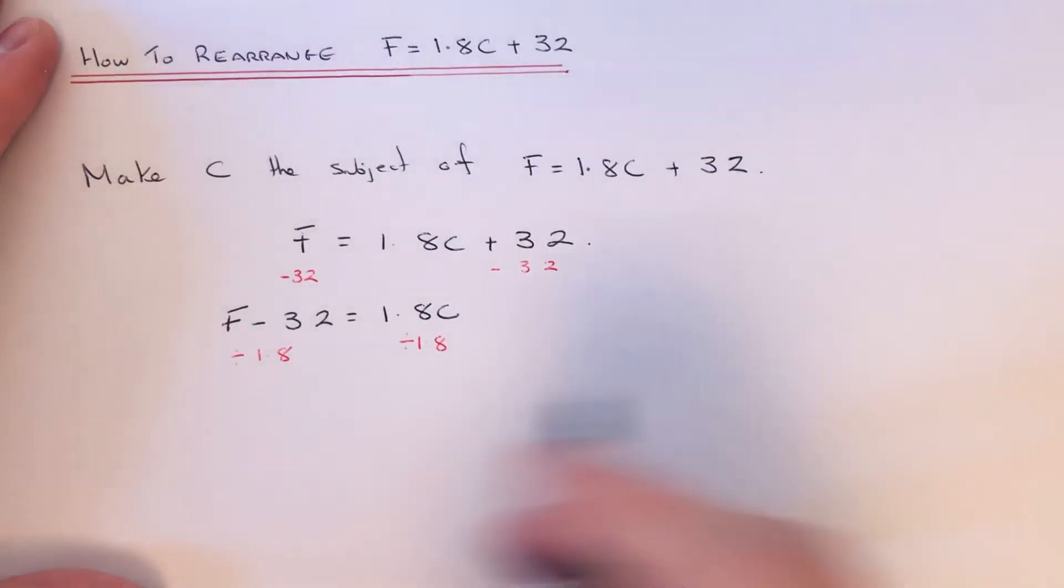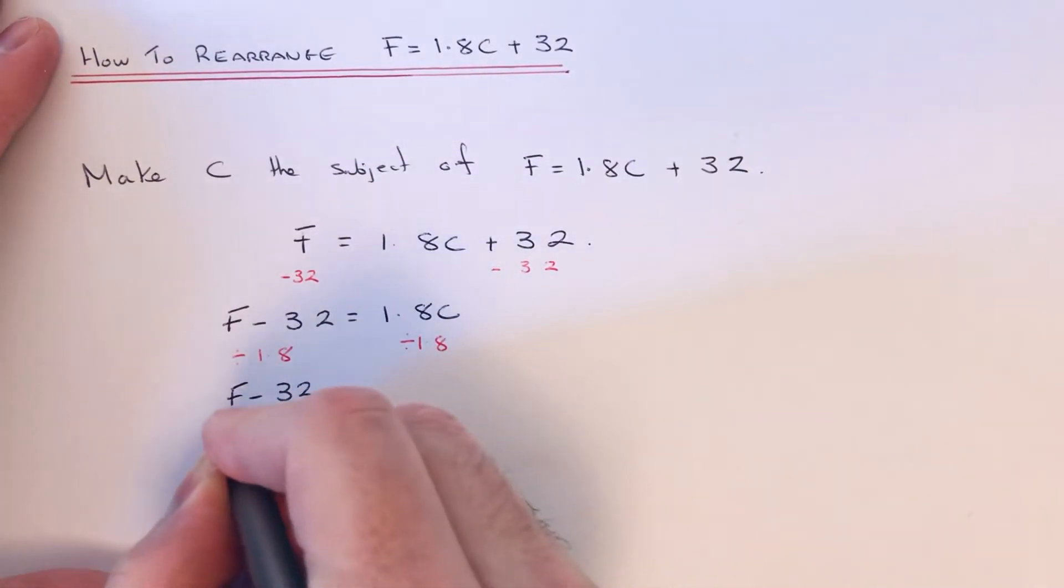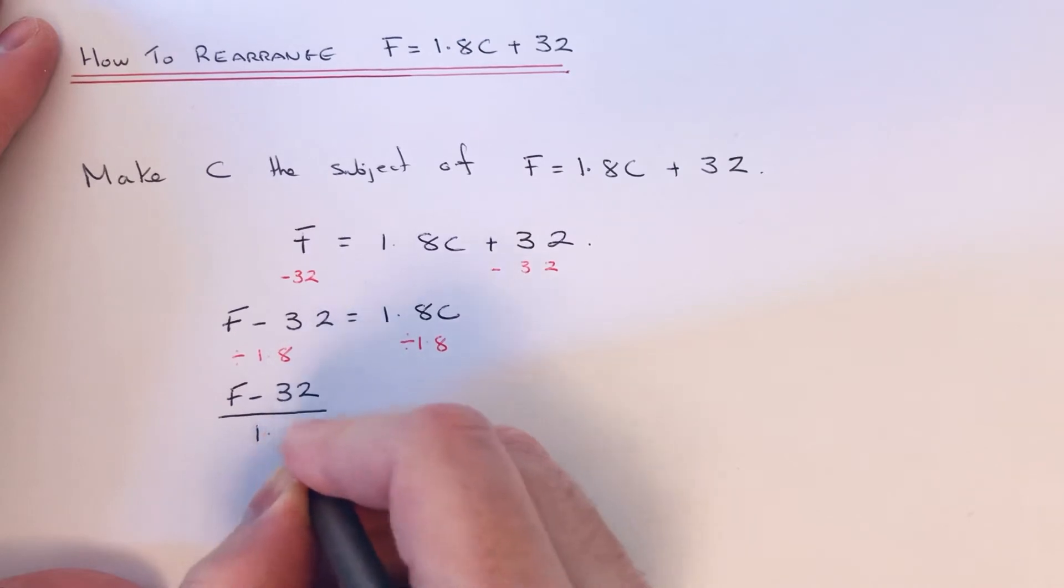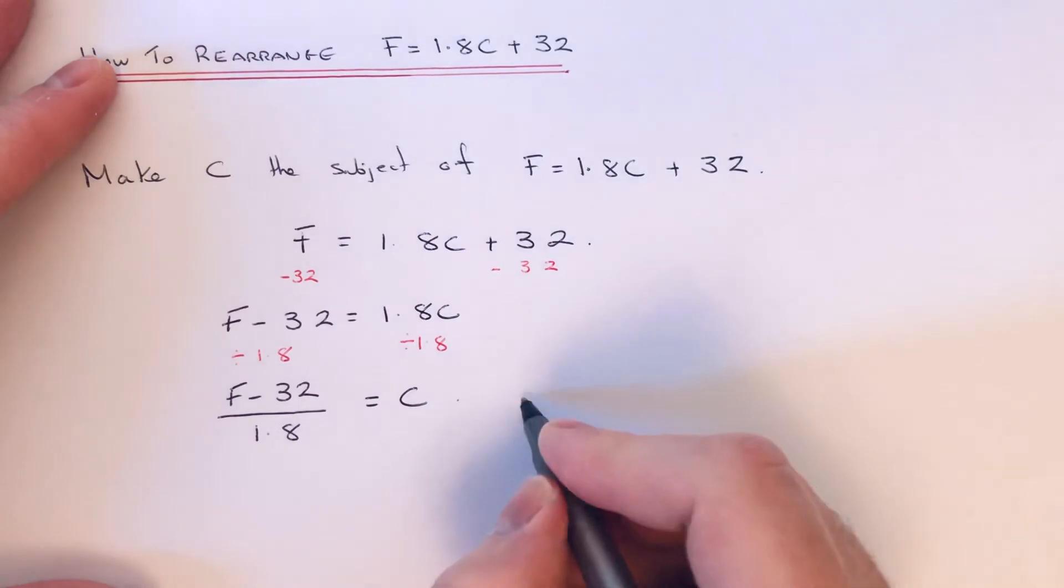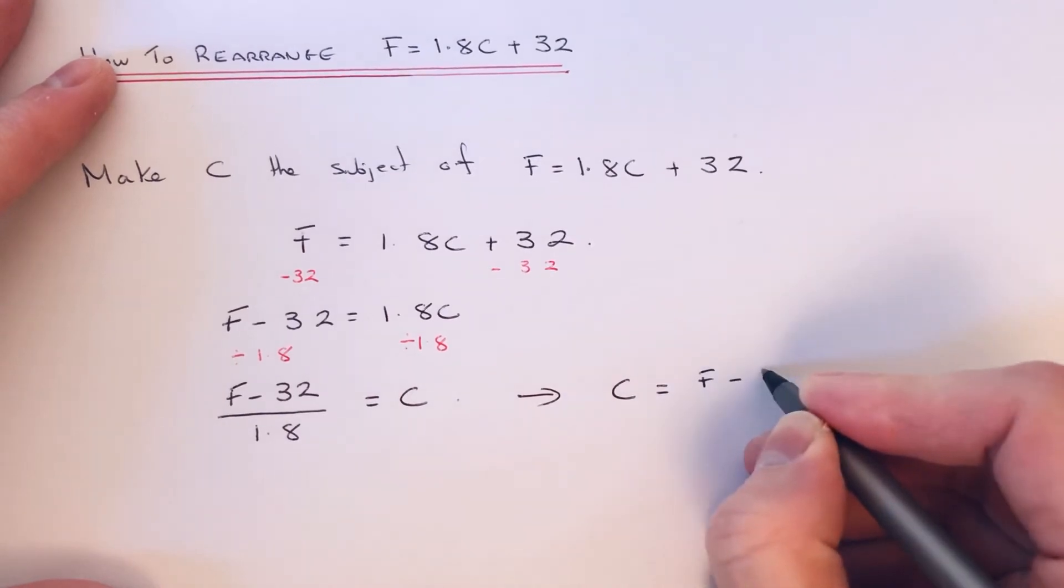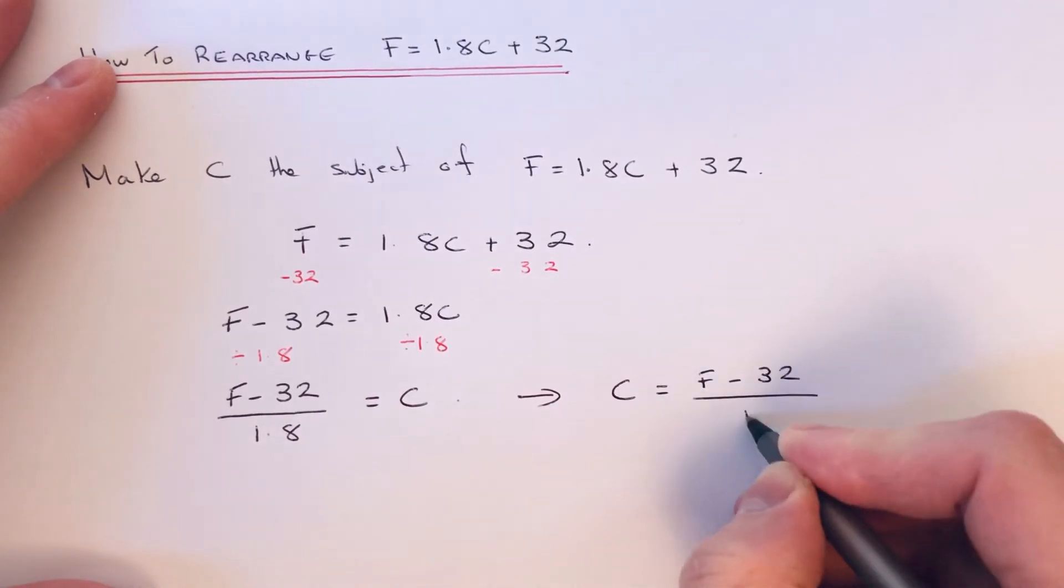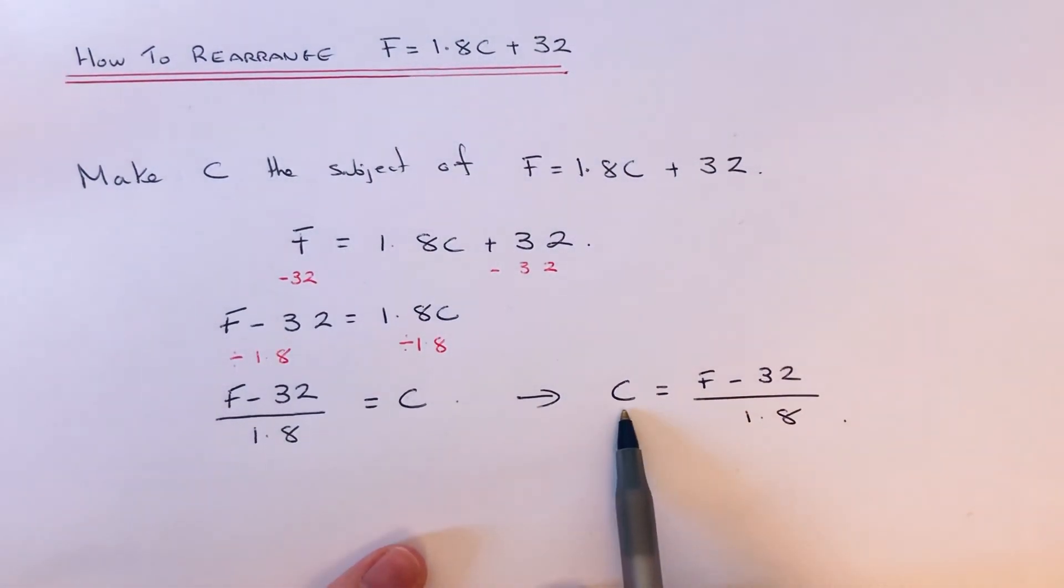So how do we write this down in algebra? Well, we do this as a big fraction, so that is now equal to C. So we just need to copy out the formula again with the C on the left-hand side of the formula instead of the right.